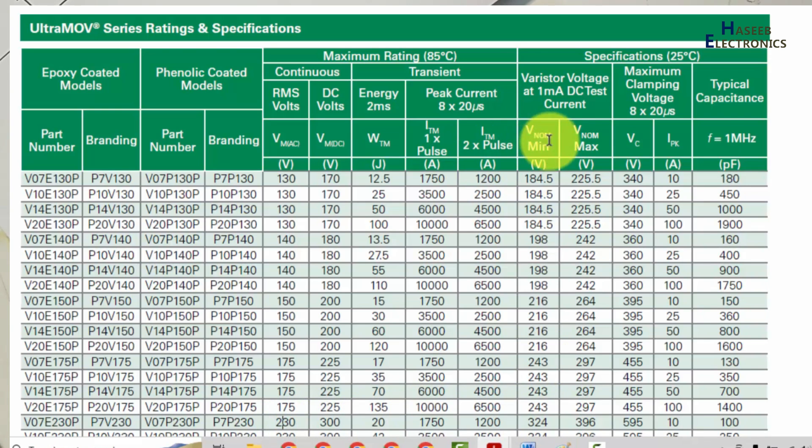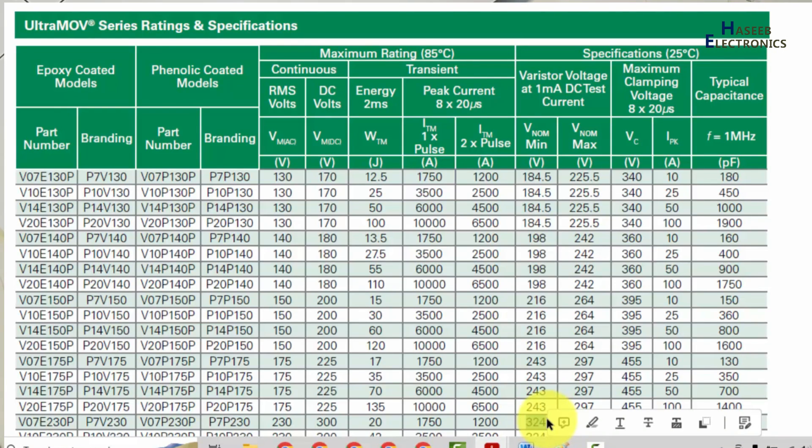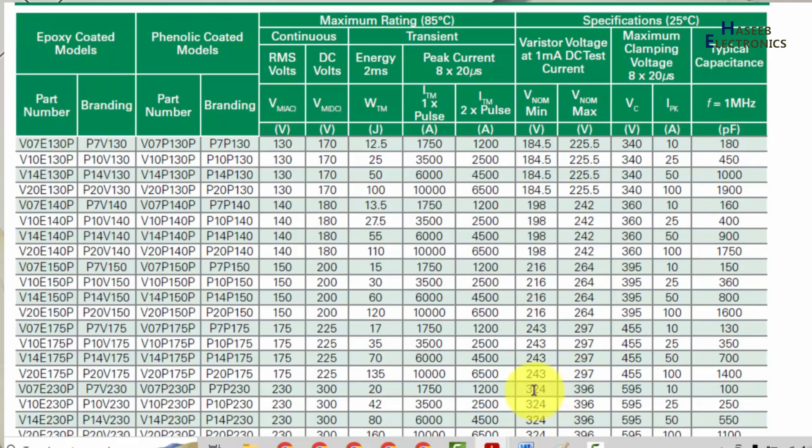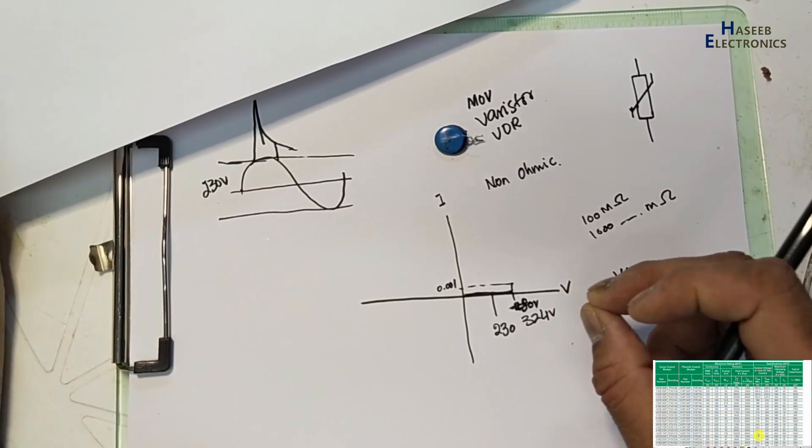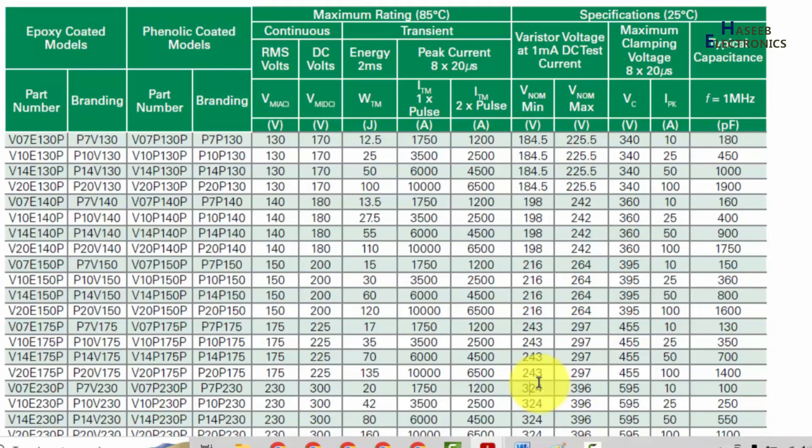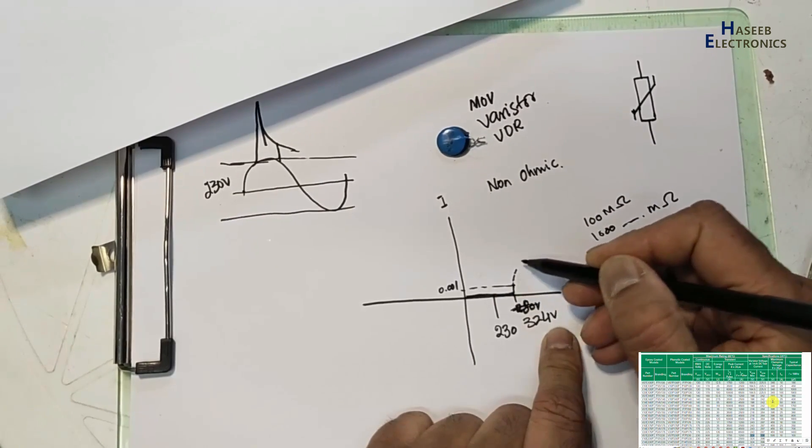This is the condition, that is called 1 milliampere DC test current. At that time this MOV will reach protection mode, it will become active because these MOVs are metal oxides, so its grains are activated. V nominal minimum to maximum - this MOV will start working between this voltage range. It may start at 324 volts or up to 396 volts. When the voltages are increasing, it will start conduction.